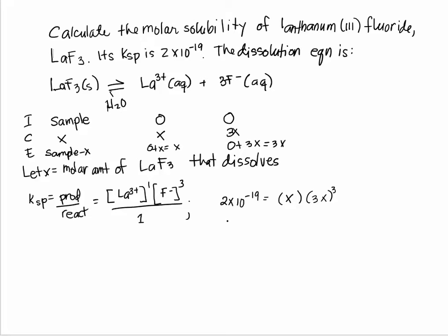So let's evaluate. Two times ten to the negative nineteen equals X times X cubed—that's X to the fourth. And three to the third is twenty-seven, so that's twenty-seven X to the fourth. So I divide both sides by twenty-seven.